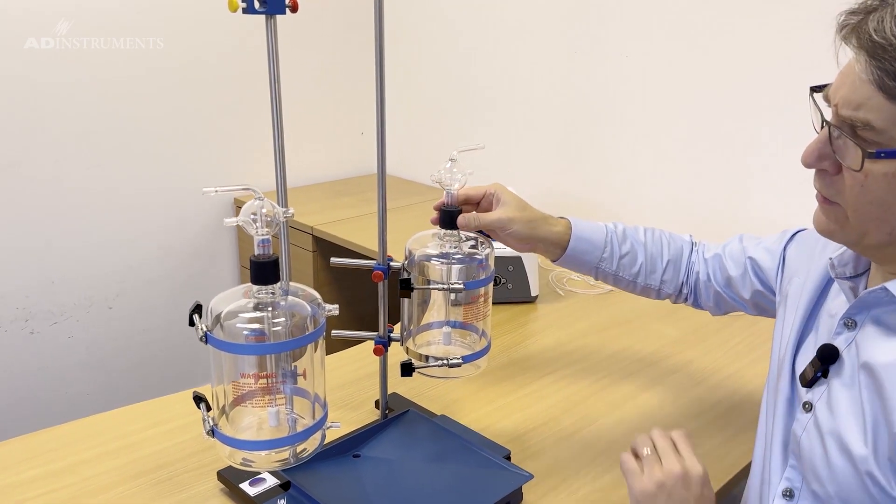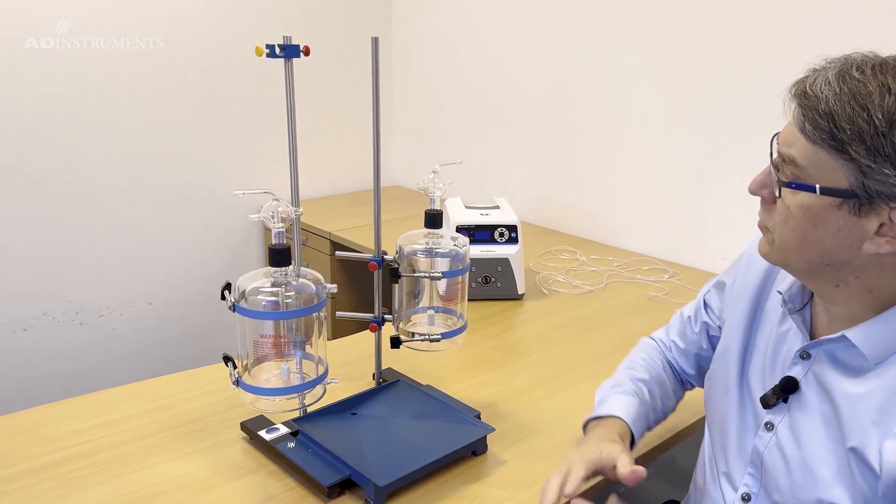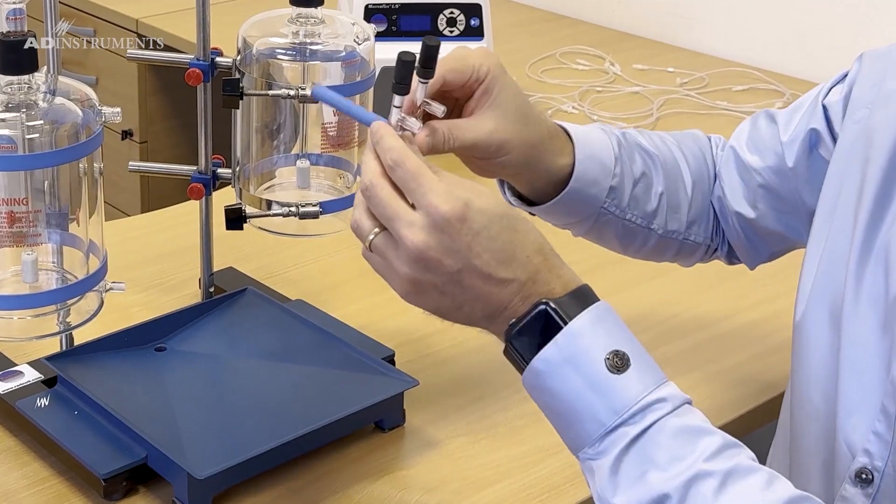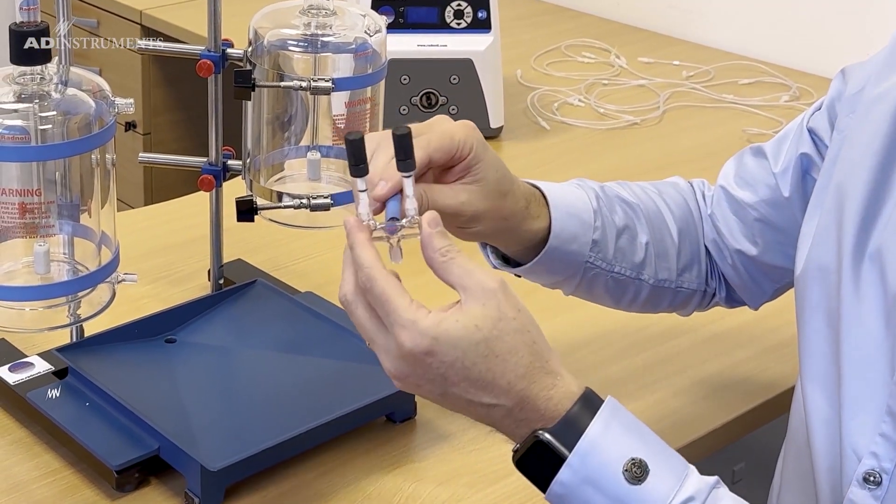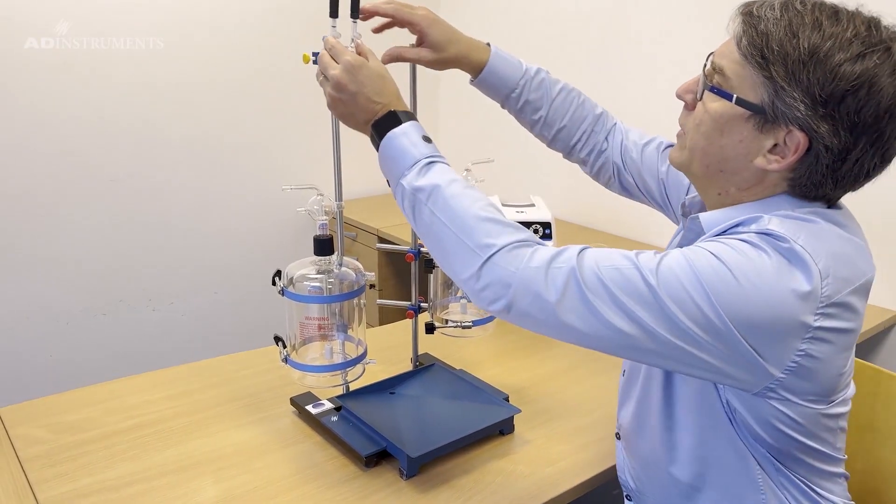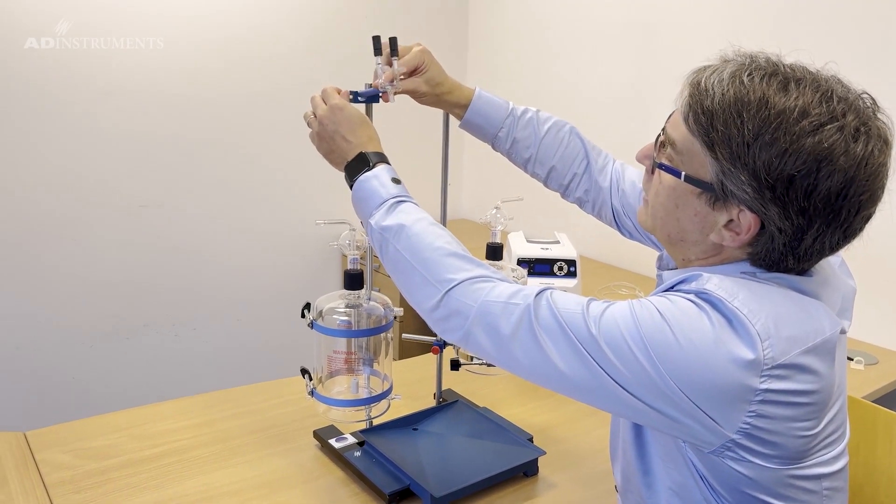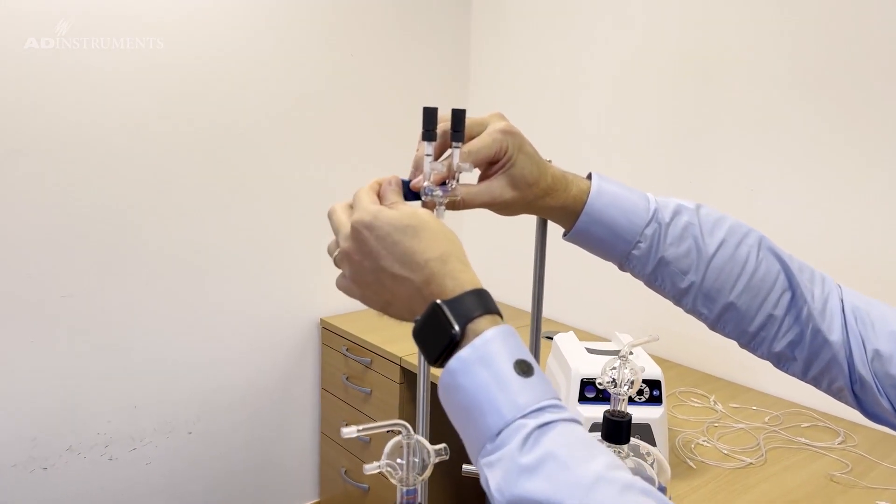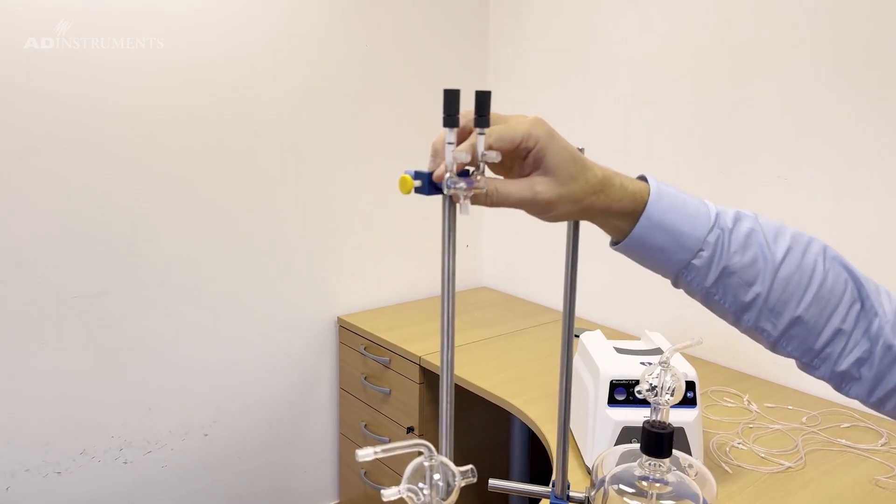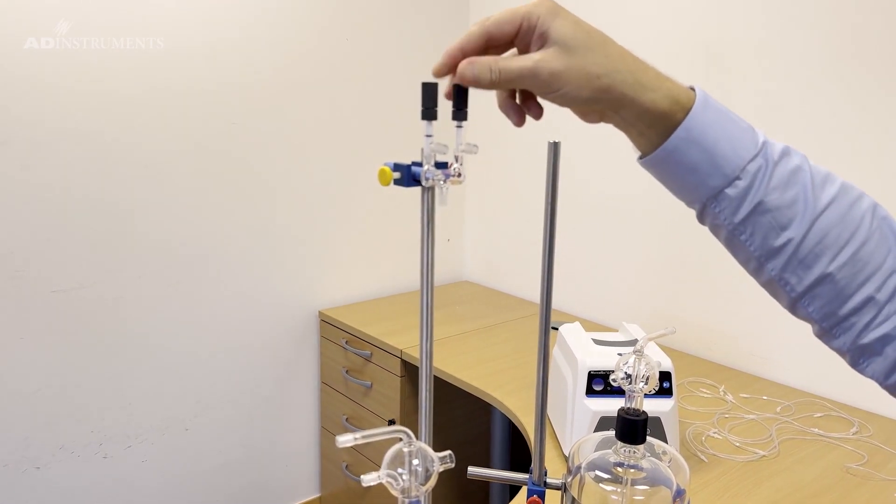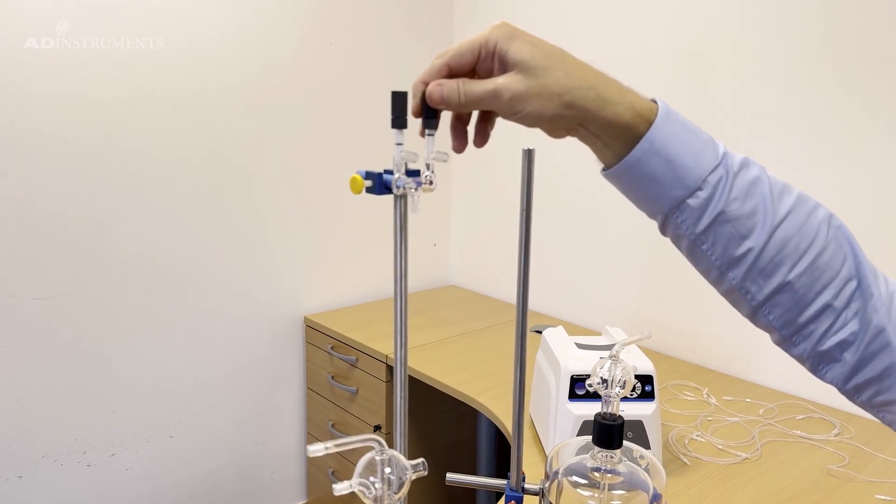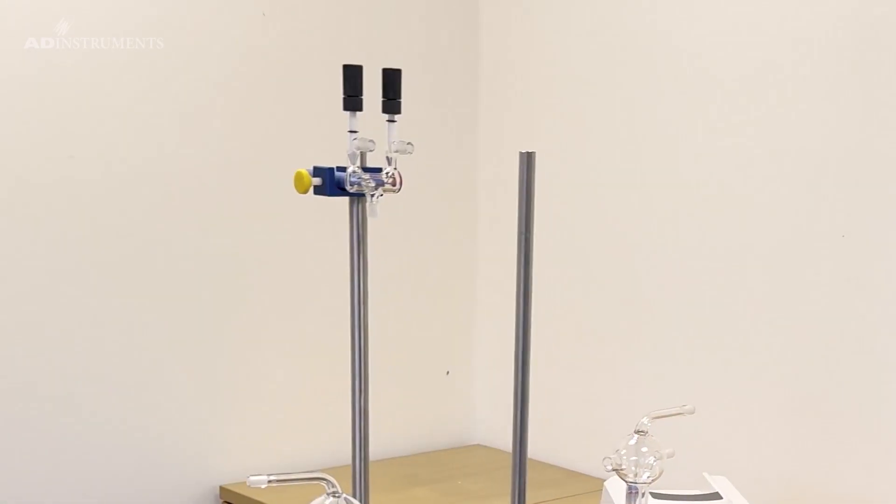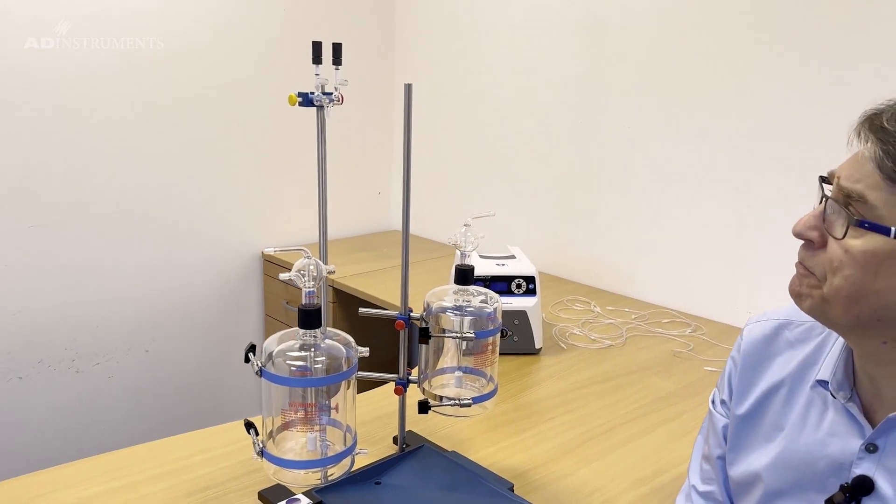To supply the carbogen or oxygen to the perfusate we have this gas manifold which we can place using the clamp with the yellow screw, which is a Teflon screw. This manifold consists of Teflon needle valves so you can adjust the flow of oxygen to each of the perfusate reservoirs.